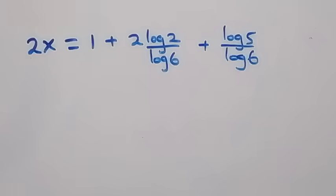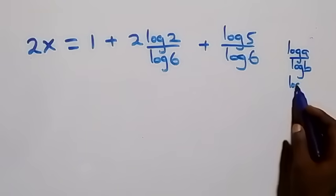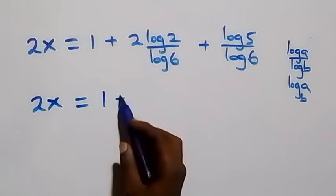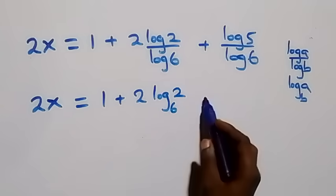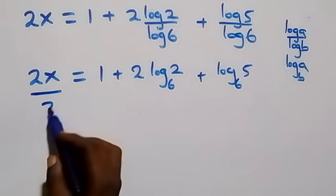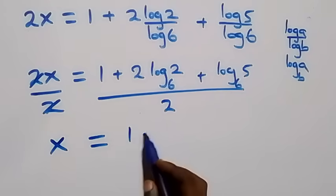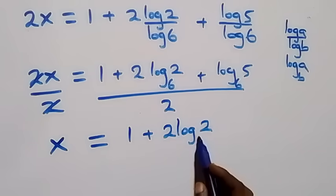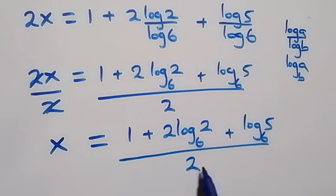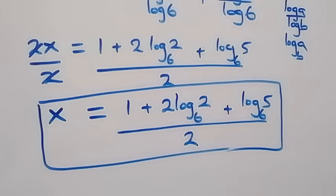From here we apply the change of base formula: log a over log b can be written as log a to base b. So what we have becomes 2x equals 1 plus 2 times log 2 to base 6, plus log 5 to base 6. We then divide both sides by 2, and we have x equals 1 plus 2 log₆2 plus log₆5, all over 2.